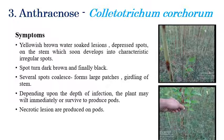Anthracnose is caused by Colletotrichum corcorum. Initially, yellowish-brown, water-soaked lesions with depressed spots can be seen. Later, these spots convert to brown, and in later stages to black in color.